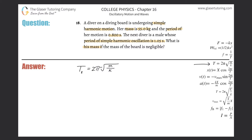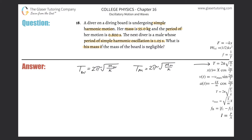So let's call these the period of the woman and the mass of the woman. I'll just leave k as the spring constant of the diving board. Then for the man: the period of the man equals 2π times the square root of the mass of the man divided by k. I can connect these two formulas through k, since it's the same for both.